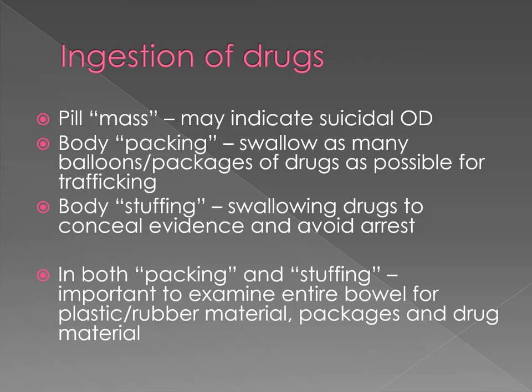When doing any kind of overdose case or suspected drug case, if there's any indication of a possible suicide, we look for a pill mass — pills that have been ingested in large quantities that have stuck together and can't all be digested. They form a conglomeration in the stomach that we can send off to get tested, or we can find multiple individual pills that have been partially digested. These are most common in suicides.